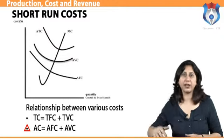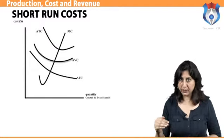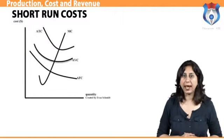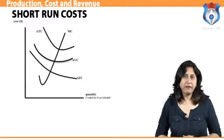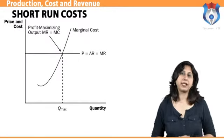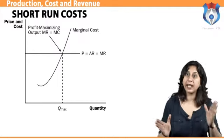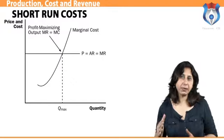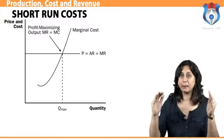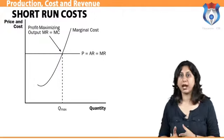Regarding the relationship between MC and AC: when MC decreases but is positive, AC also decreases, but MC is greater than AC. MC always cuts AC at its minimum point, where MC equals AC. When MC increases, AC also decreases but MC is less than AVC. For MC and AVC: when MC decreases, AVC also decreases but MC is less than AVC. MC always cuts AVC at its minimum point where MC equals AVC. When MC increases, AVC also increases but MC is greater than AVC.